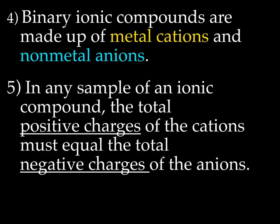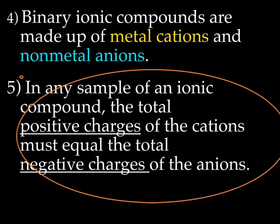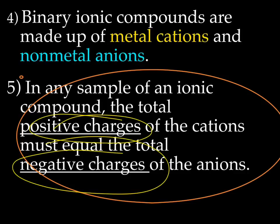So binary ionic compounds, that's when you've got a cation and anion that hook up. They're made up of metal cations and non-metal anions. And this here is hugely important: In any sample of an ionic compound, the total number of positive charges of the cations must equal the total number of negative charges of the anions. So think about that. I didn't say the total number of cations needs to equal the total number of anions. It's the total number of positive charges needs to equal the total number of negative charges.